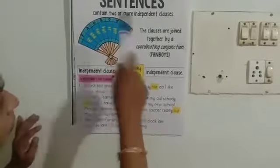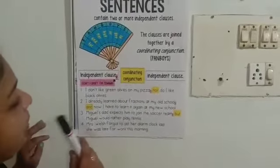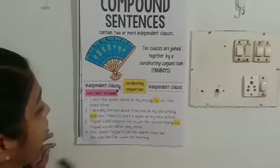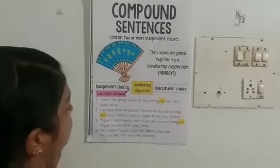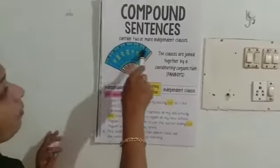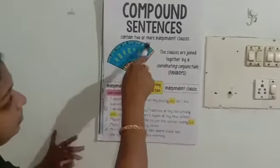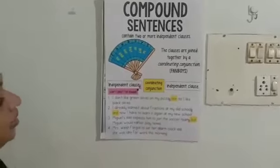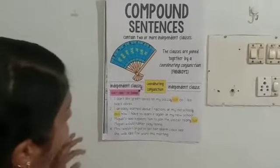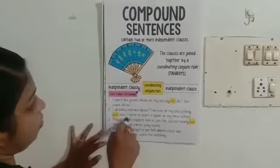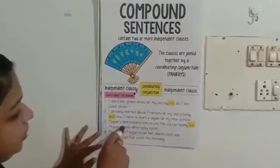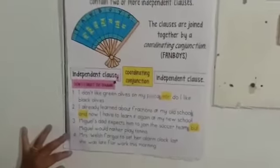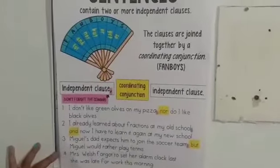It's very simple. Compound sentence writing is much simpler than complex sentences. So you should practice compound type of sentences first. Later, you can study complex sentences. Once you practice compound type of sentences thoroughly, then you start writing examples of complex sentences.